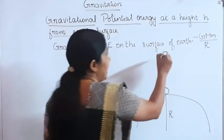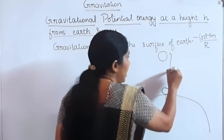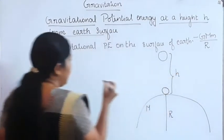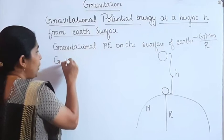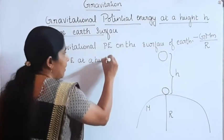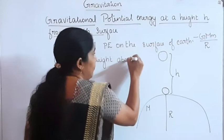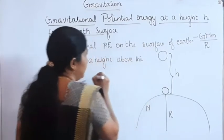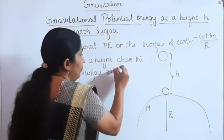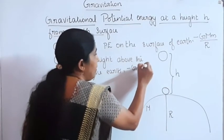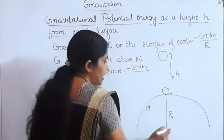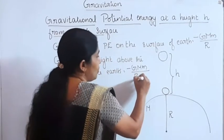Now, what about the gravitational potential energy at a height h above the surface of the Earth? That can be written as: gravitational potential energy at a height h above the surface of the Earth is equal to minus GMm divided by R plus h, since the distance from the center is R plus h.